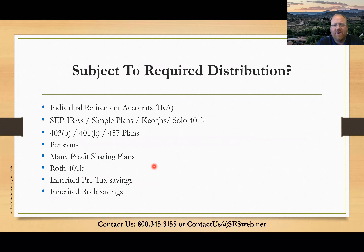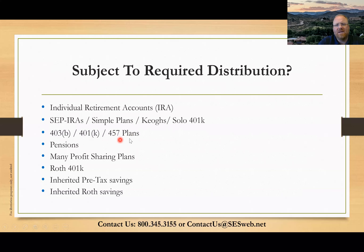Required minimum distributions — the first question is: what parts of your portfolio are subject to these? It can be simplified by saying anything you have saved and never paid taxes on. So all of your IRAs, individual retirement accounts, your SEP IRAs, SIMPLE IRAs, KEOGs, solo 401ks — those are all primarily self-employed plans. Then you've got the work-based plans: 403Bs, 401ks, and 457s. These are all work-based savings plans where you save pre-tax.